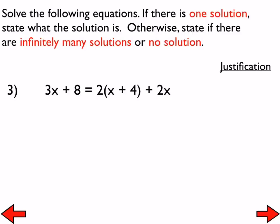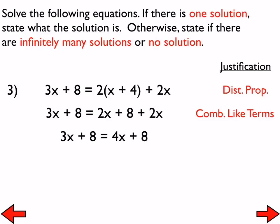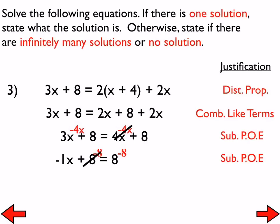For number three, use the distributive property on the right-hand side, then combine like terms. I stated earlier: the only way to end up with no solution or infinitely many solutions is if the variables cancel out. In this case the variables are not canceling out — they remain on the left-hand side — so it cannot be no solution or infinitely many solutions. The solution is x equals 0. That is the only value that creates a true statement in the original equation. If the variables don't cancel, there is a solution.